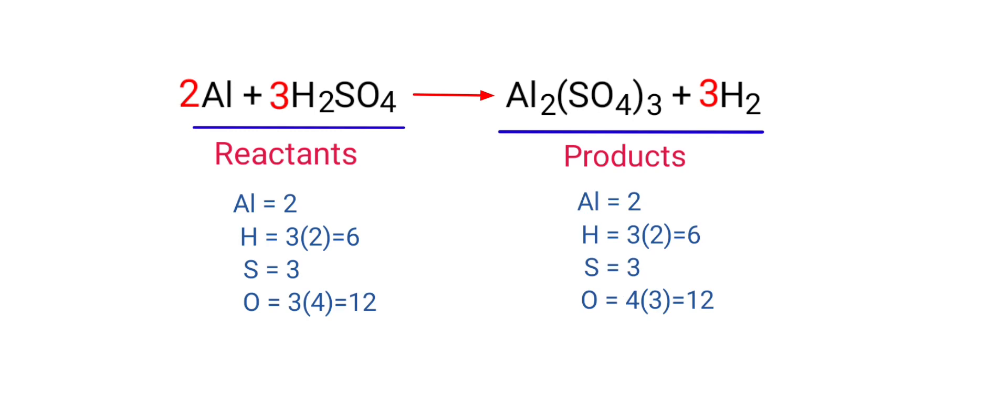The equation is now balanced. There are 2 Aluminium atoms, 6 Hydrogen atoms, 3 Sulphur atoms, and 12 Oxygen atoms on both sides.